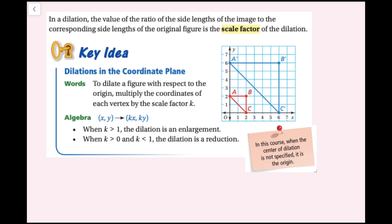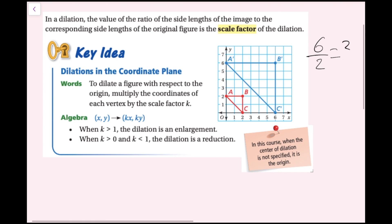In a dilation, the value of the ratio of the side lengths of the image to the corresponding side lengths of the original figure is the scale factor of the dilation. The scale factor is simply when you divide one of your side lengths of the image by the corresponding side length of the original figure. Here this line segment is six units long, and the original corresponding segment a to b is only two units, so the scale factor is three.